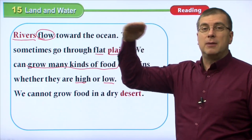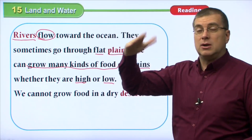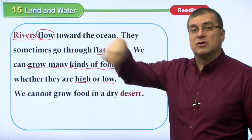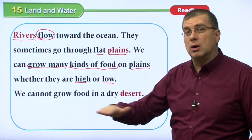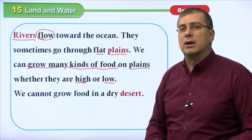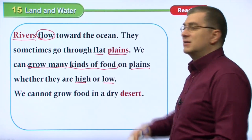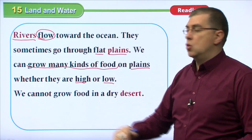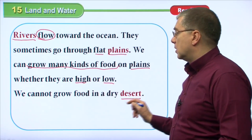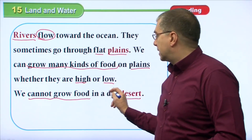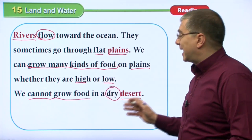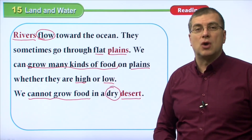Plains can be high up in mountainous areas where there's suddenly a flat piece of land, or they can be lower down near the ocean. We cannot grow food in a dry desert. Why? Because it's dry. If you don't have water, you can't grow plants. So of course, we can't grow food in a dry desert.